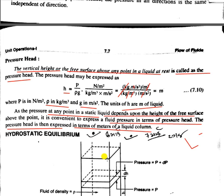For 1 atmosphere, the liquid column value is 10.33 meters of liquid column. One bar in liquid column — the pressure head is 1 bar. So 1 atmosphere corresponds to 10.33 meters of liquid column. This fundamental concept will be discussed further in the next topic: hydrostatic equilibrium.